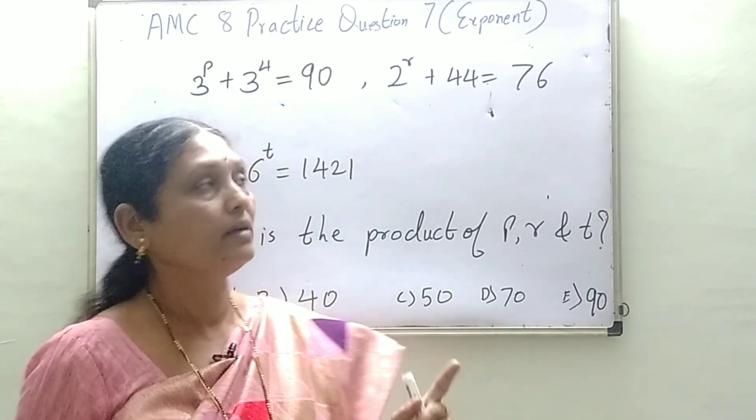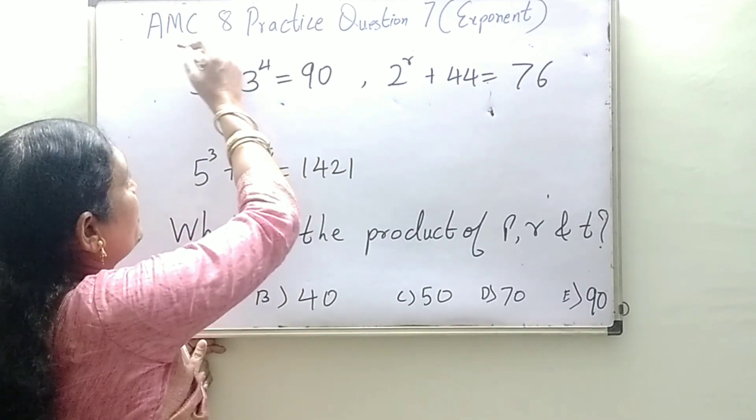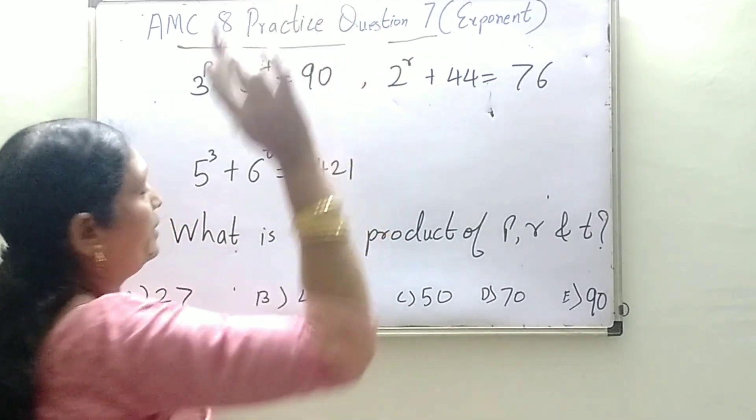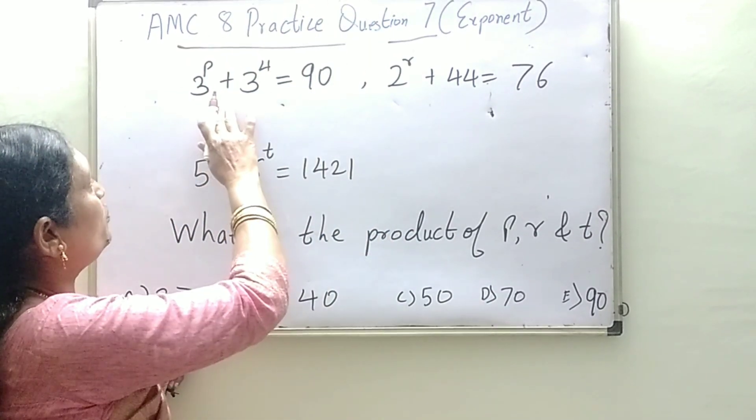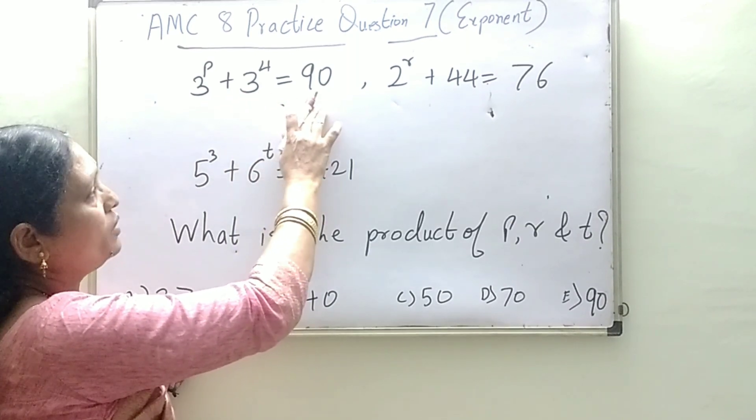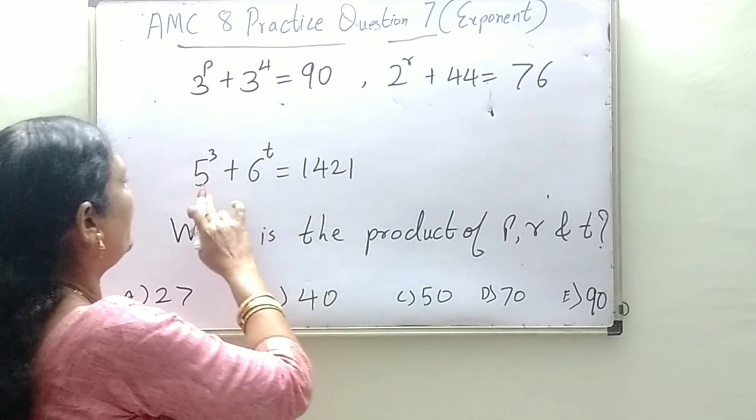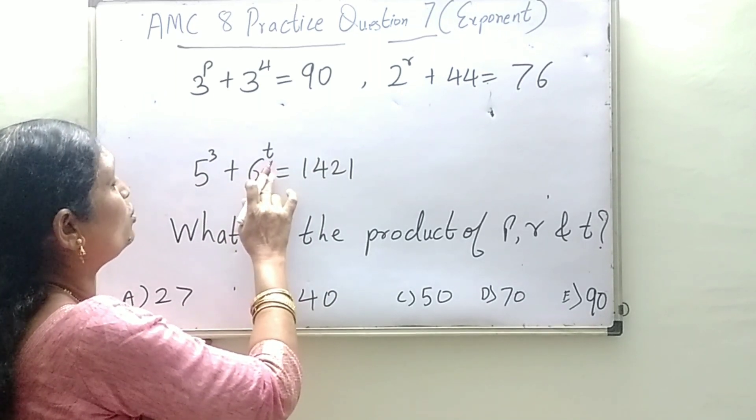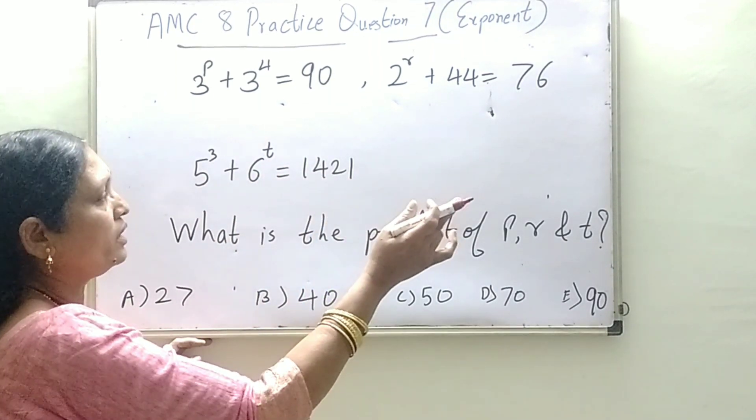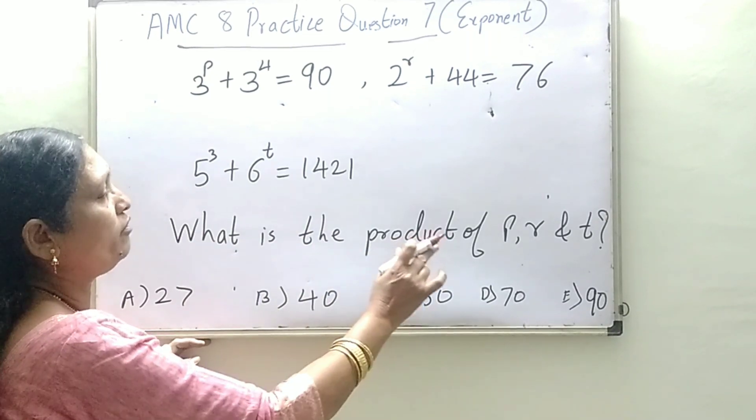Hello children, welcome to Math Park AMC 8 practice question number 7 on exponents. 3 raise to p plus 3 raise to 4 is equal to 90. 2 raise to r plus 44 is equal to 76. 5 raise to 3 plus 6 raise to t is equal to 1421. What is the product of p, r, and t?